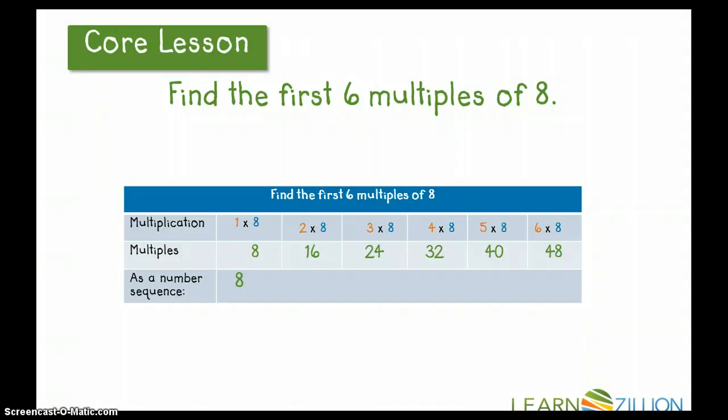And as a number sequence, I would write it this way: eight, sixteen, twenty-four, thirty-two, forty, and forty-eight. Notice, again, that each of these numbers have commas in between them to show that this is a list of numbers, and then an ellipsis at the end to show that this number sequence could go on and on.